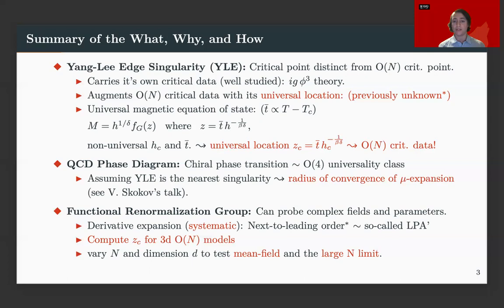So how do we see this? Well, when we look at the QCD phase diagram, we expect that the chiral phase transition belongs to an O(4) universality class. And assuming that the Yang-Lee edge singularity is the nearest singularity to the origin, this allows us to get an estimate for the radius of convergence of the chemical potential expansion. For more details on this, you can see Vladimir Skokov's talk.